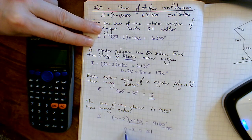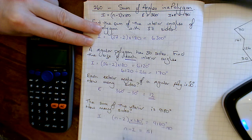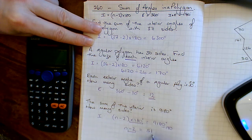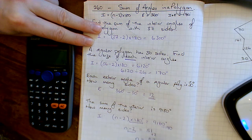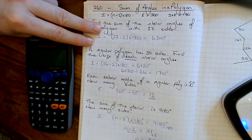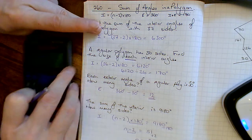Now I'll think about this one. If the number of sides take away 2 is 51, what must the number of sides be? Let's just add 2 to this side, so the number of sides must be 53. So 53 take away 2 times 180 must be that one.